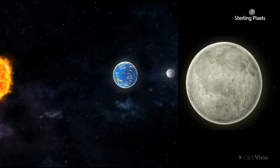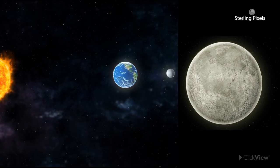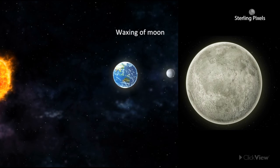It rises almost exactly as the sun sets and sets just as the sun rises the next day. The moon has now completed one half of the lunar month. This completion of one half is also known as waxing of the moon.